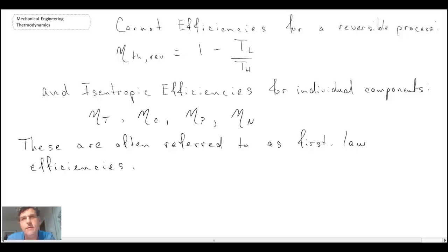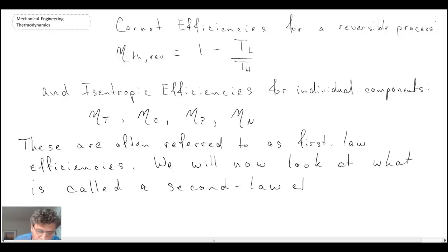We will now look at a different type of efficiency, and we will refer to this as being a second law efficiency. And in doing this, it will take us towards an area called exergy analysis, which enables us to compare a cycle that we might be looking at to how that cycle would be performing if it was performing without any irreversibility, so in a reversible manner.